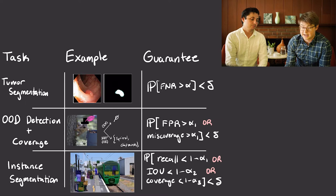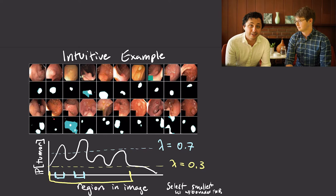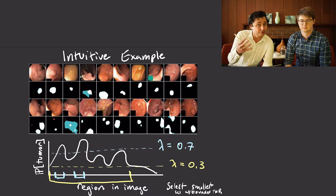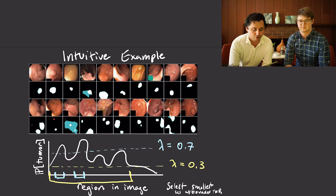We can control all three of these error rates at the same time. And going even beyond these three learning tasks, whenever you can define a notion of statistical error for a problem, you can control these risks using the techniques we're going to show you. Now that Steven has given you the lay of the land, let's start with an intuitive example of the procedure. We're going to pick one of the simplest versions — the tumor segmentation one.